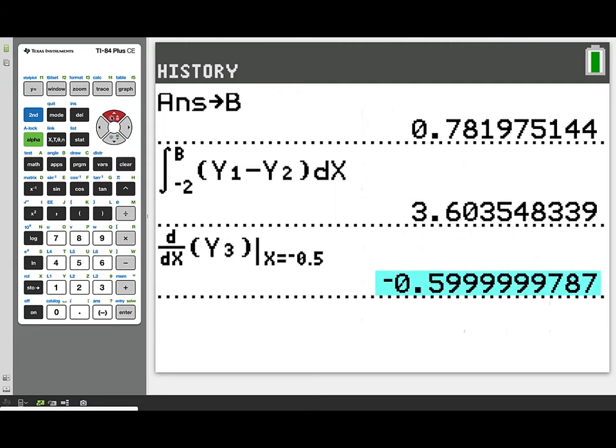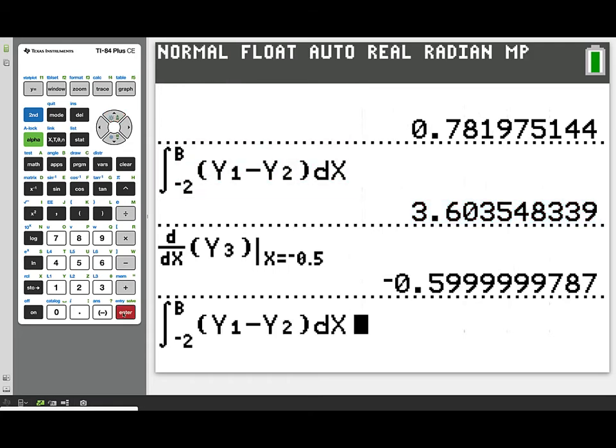In part c of the problem, we're asked to find a volume of a solid that has as a base the region in question here. I've gone ahead and copied the interval down from the previous part A, because we're going to adjust this. This region, each cross-section that is perpendicular to the x-axis is a square.